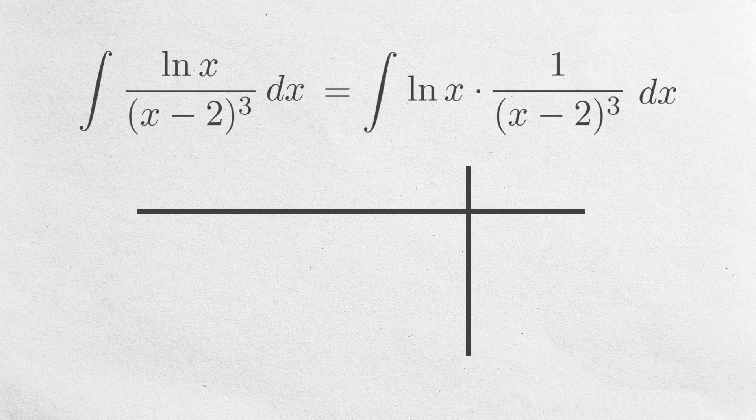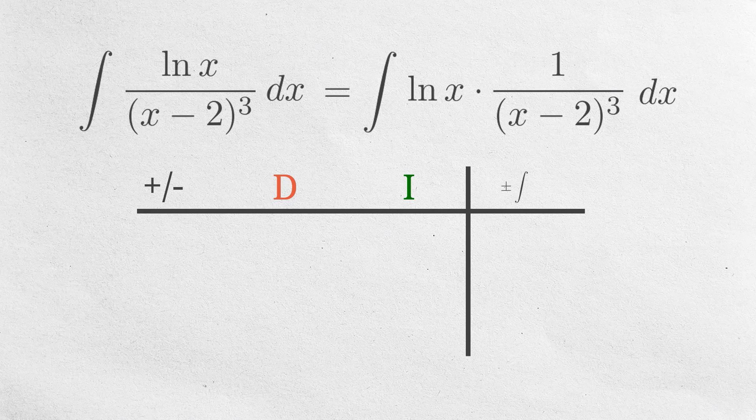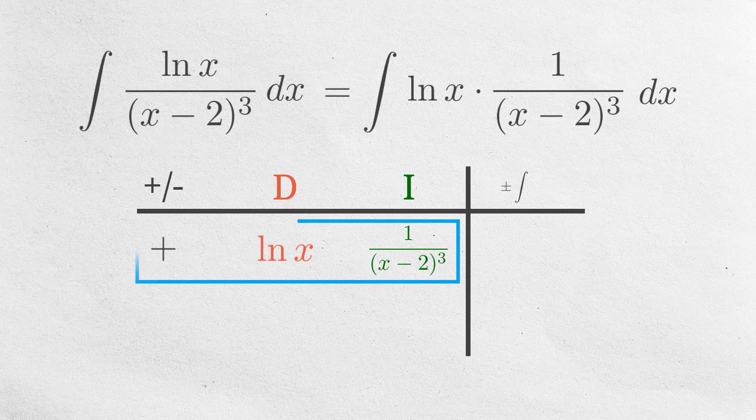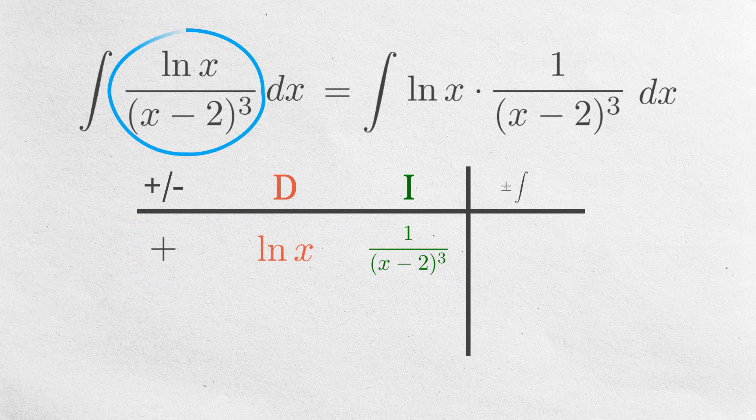We can use the tabular method of integration by parts. First column, we put a plus here, representing positive 1. For the u, we should put the ln function, and for the dv, we put the rational function. We can easily verify that when multiplying everything in this row, we will get the original integrand.